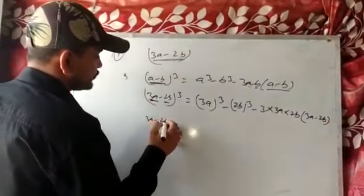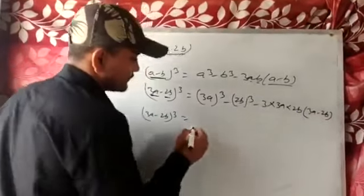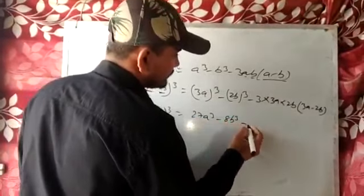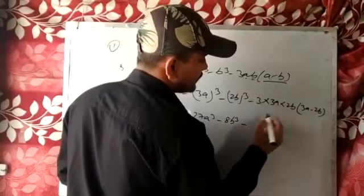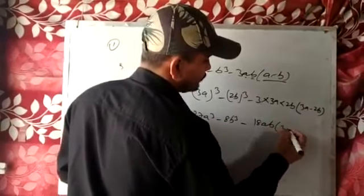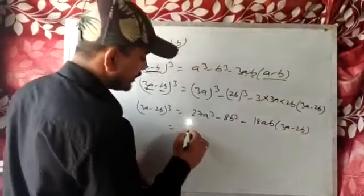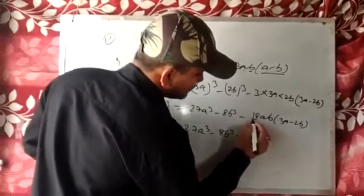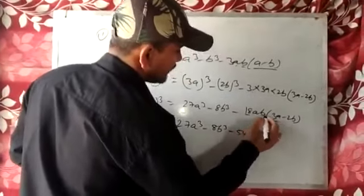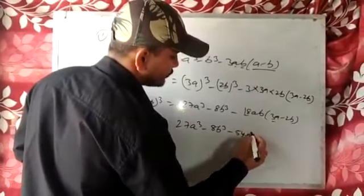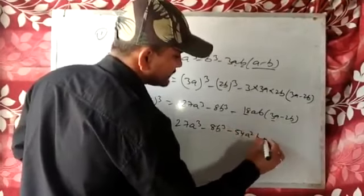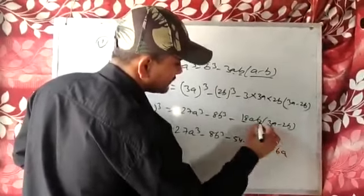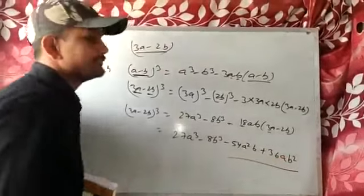3a minus 2b whole cube is equal to 27a cube minus 8b cube minus 3 into 6ab into 3a minus 2b, giving 54a squared b minus 36ab squared. This is the answer.